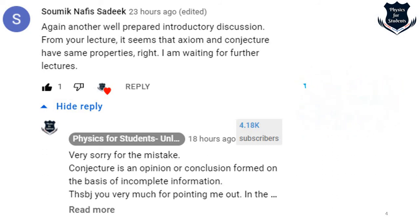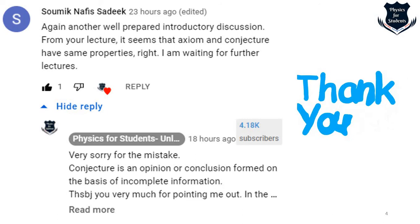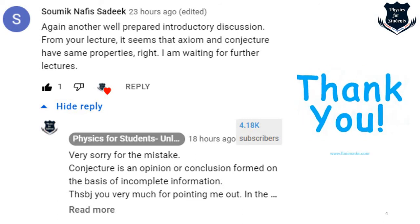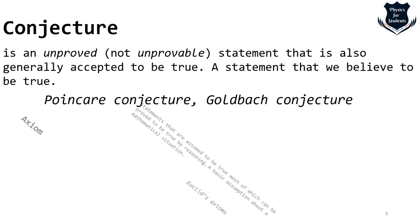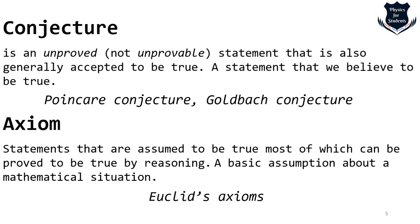My kind apologies to all the viewers for making this error, although it was not intentional. This gives you motivation showing how minutely all of you are watching my videos. So in order to go ahead with the correction: a conjecture is basically an unproven, but not unprovable, statement that is generally accepted to be true — for example the Poincaré conjecture and Goldbach conjecture. An axiom, however, is a statement assumed to be true, most of which can be proved by reasoning — a basic assumption about a mathematical situation, such as Euclid's axioms.